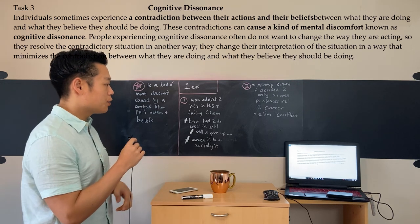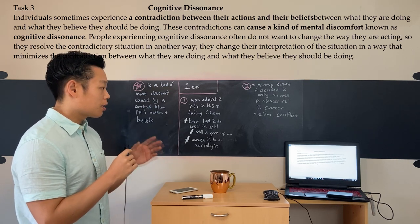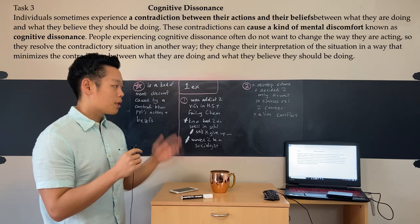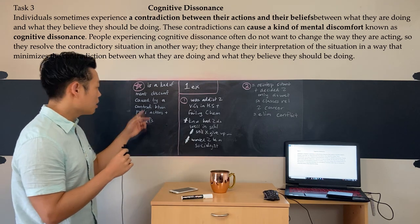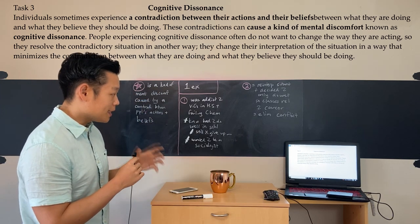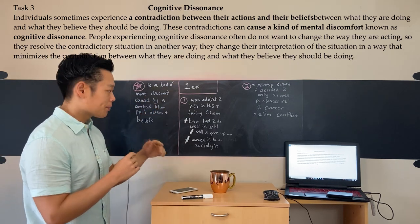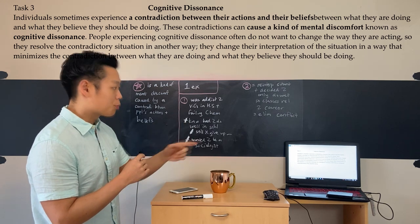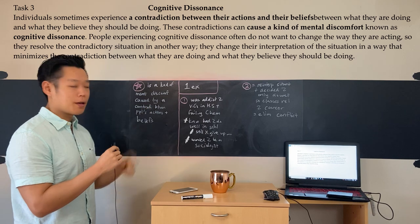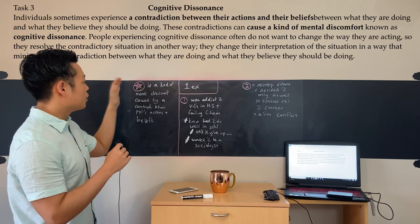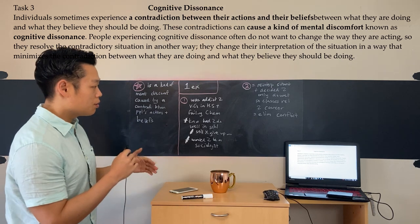Individuals sometimes experience a contradiction between their actions and their beliefs. These contradictions can cause a kind of mental discomfort known as cognitive dissonance. So cognitive dissonance is a kind of mental discomfort caused by a contradiction between people's actions and beliefs — that's our full definition.